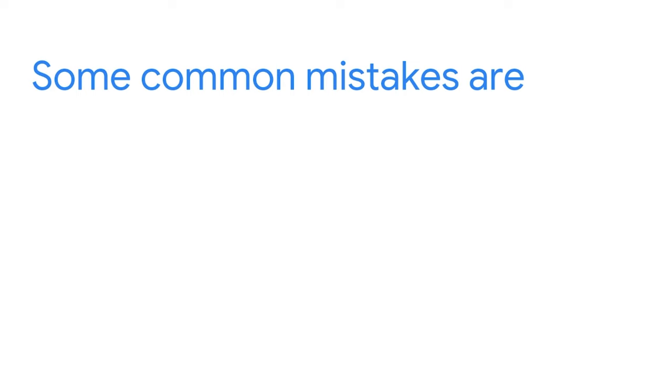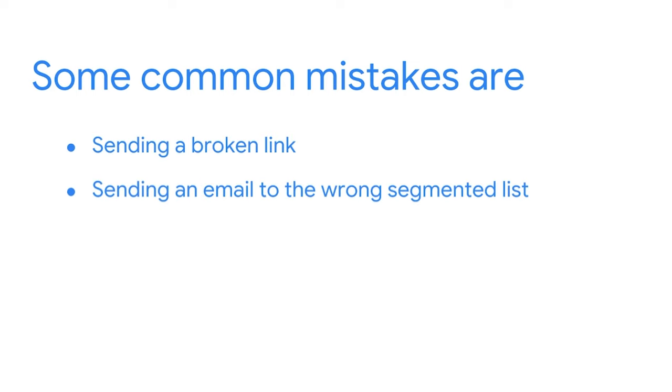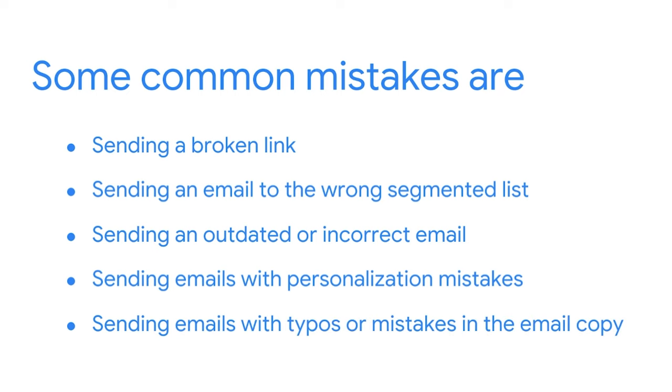Although email marketing is an incredibly trusted and effective way to keep your clients up to date, it's important to note that sometimes mistakes happen. This video will give you some tips for when those mistakes occur so you can recover and your relationship with your subscribers isn't affected. Since you're sending emails to your recipients' inboxes, there's no way to edit them in real time — once the email is sent, it's out of your hands. Some common mistakes are sending a broken link, sending an email to the wrong segmented list, sending an outdated or incorrect email, sending emails with personalization mistakes, or sending emails with typos or mistakes in the email copy.